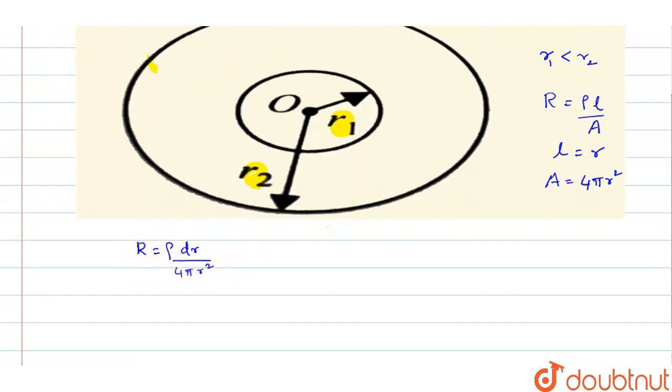Now, the total resistance if you have to find, total resistance will be getting with the integration. So total resistance R will be equal to, constants we shall take it outside, so rho by 4 pi we shall take it outside, integral of, between where to where?